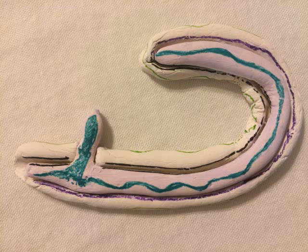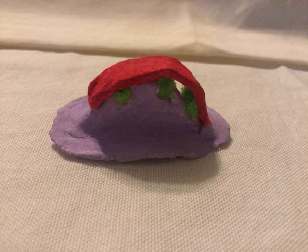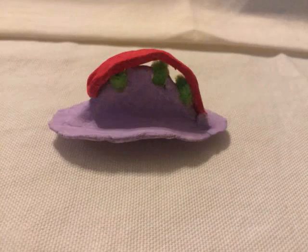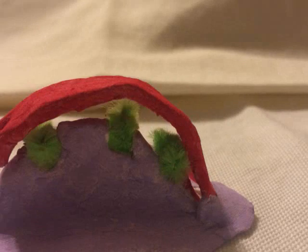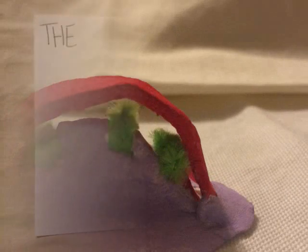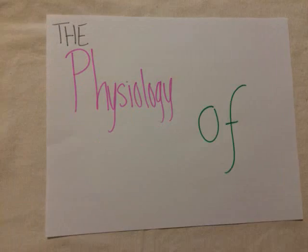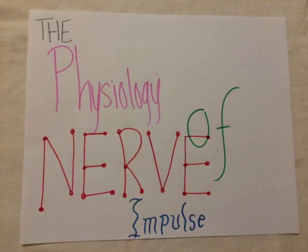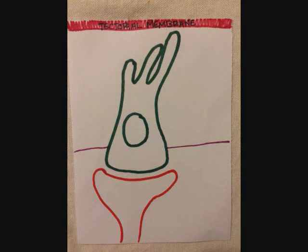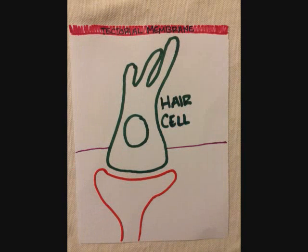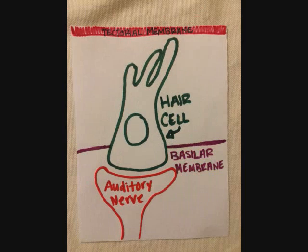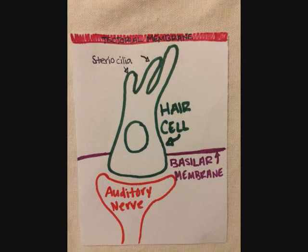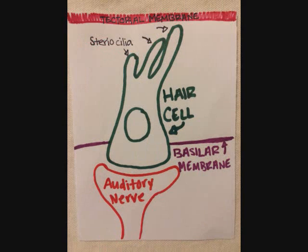Step 4: The pressure waves of perilymph distort the basilar membrane, thus creating a nerve impulse. The Physiology of Nerve Impulse: The tectorial membrane, hair cell, auditory nerve, basilar membrane, and stereocilia all take part in a nerve impulse.